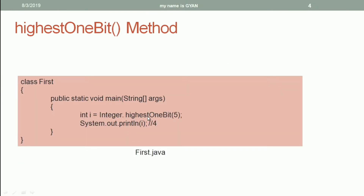Here we are calling the highestOneBit() method of the class integer and passing 5 as its argument. The weight corresponding to the highest 1-bit in the binary pattern of 5 will be returned and stored into the variable i of type integer. When we print the variable i, it will print 4 — the weight of the most significant 1 in the 32-bit binary pattern of 5.